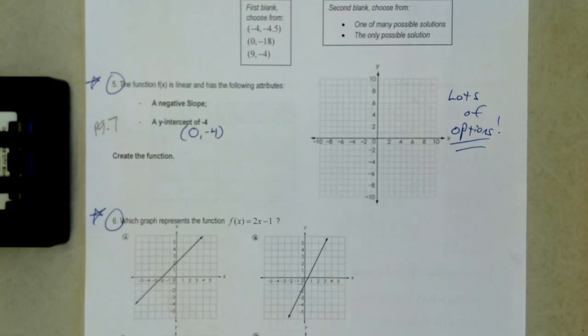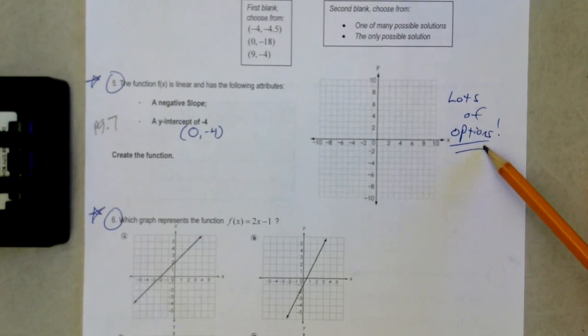So number 5, here we go. The function f of x is a linear function and has the following attributes. Notice there is nothing going on here. So we are going to create a function. We are creating a line, basically. So we do have a lot of options.